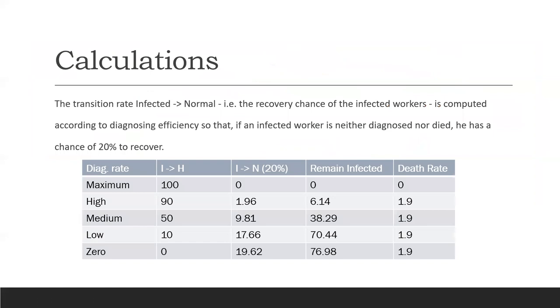Let me explain some calculations. The transition rate of infected people going back to normal, that is the recovery chance of the infected workers, is computed according to the diagnosing efficiency that you input to the system. If an infected worker is neither diagnosed nor died, he or she has the chance of 20% recovery.